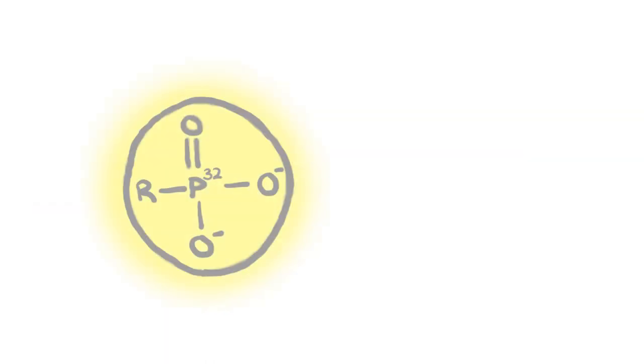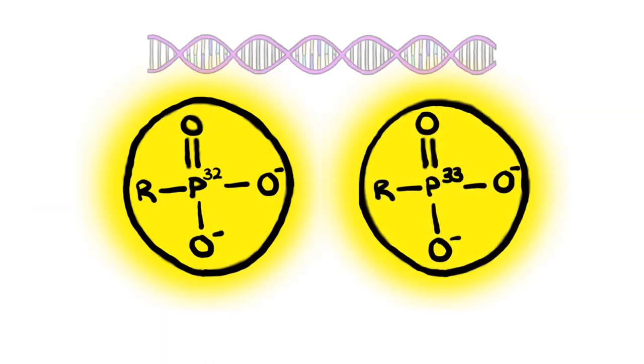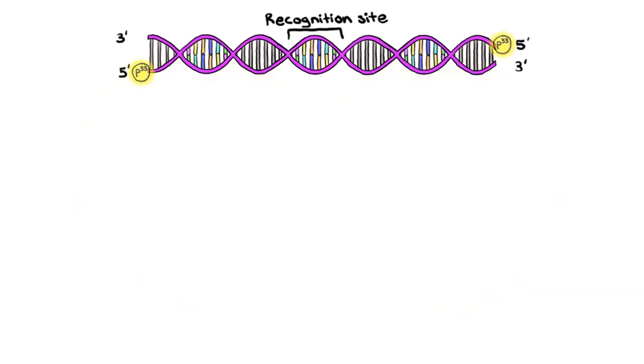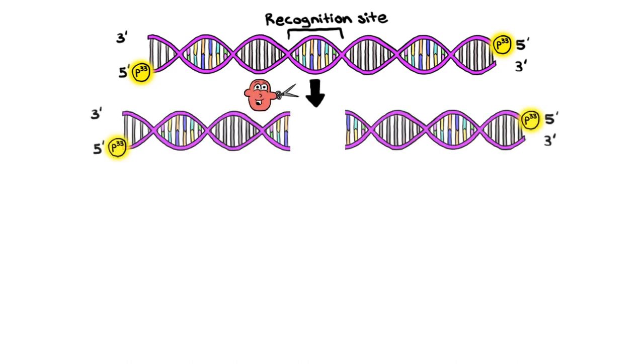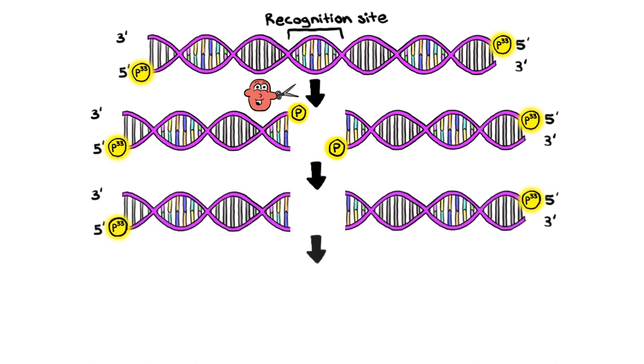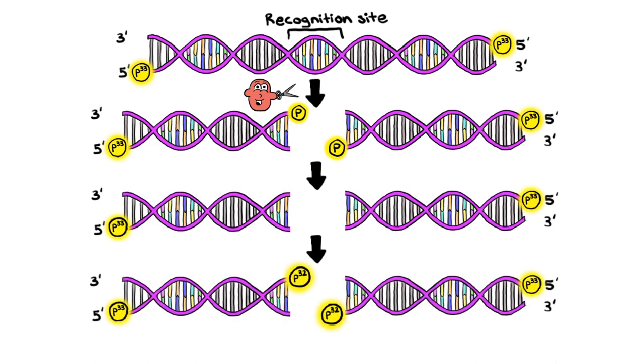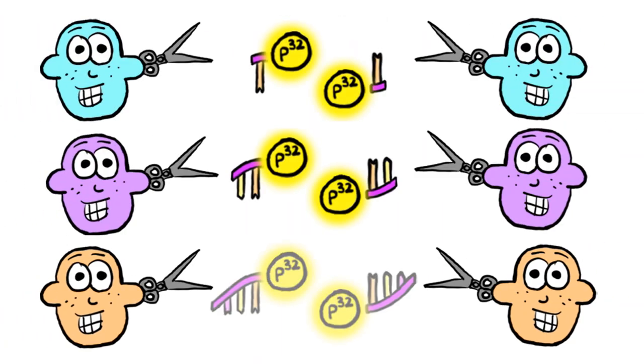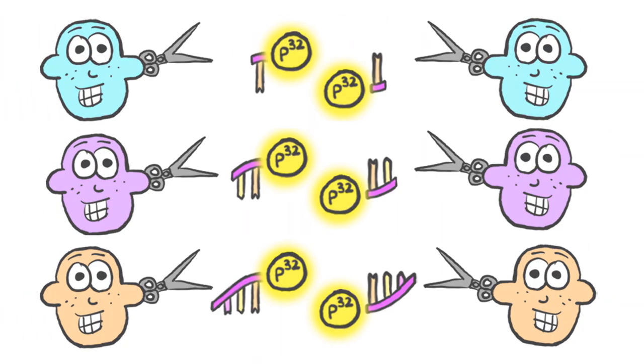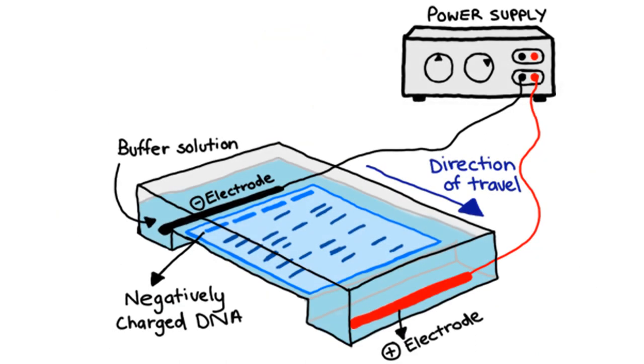To identify the sequence, Smith used radioactive phosphorus labeling of DNA. Phage T7 DNA was initially labeled with the radioisotope phosphorus-33 at the five prime ends. This was then cleaved by HindII. Five prime phosphoryl groups were removed by alkaline phosphatase and relabeled with phosphorus-32 phosphoryl groups. These small fragments were reduced by other nucleases to monody or trinucleotides and analyzed by electrophoresis to determine the nucleotide sequence.